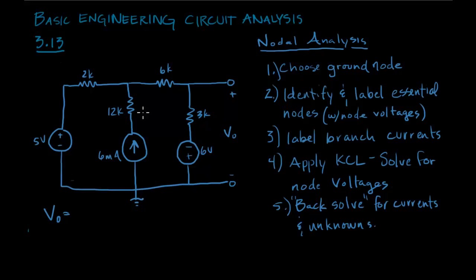Now we want to identify and label the essential nodes. We have really only one essential node in here, and it's V1. The reason is that we could consider this a node right here, except that we know what the voltage is. Remember this is all of this is our ground, so we know that this is 5 volts up here. So we don't really need to assign that.